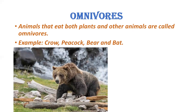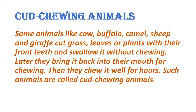Next is cud-chewing animals. Some animals like cow, buffalo, camel, sheep and giraffe cut grass, leaves or plants with their front teeth. Aapne dekha hoga cow ko, woh kya karti hai — grass, leaves, is tarah ke plants, woh unka food hota hai. Toh unke front teeth strong hote hai, unse woh cut karte hai. And swallow it without chewing — woh usko bina chew kiye swallow kar jate hai. Later they bring it back into their mouth for chewing, aur phir usko chew karte hai.